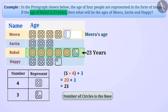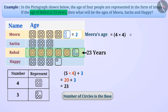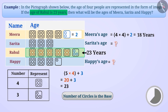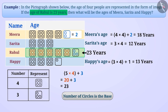To represent Meera's age, 4 complete images and one partial image are given. The partial image represents 2. So Meera's age is 4 multiplied by 4 plus 2, which equals 18 years. Sarita's age is 3 multiplied by 4, which equals 12 years, and Happy's age is 3 multiplied by 4 plus 1, which equals 13 years.